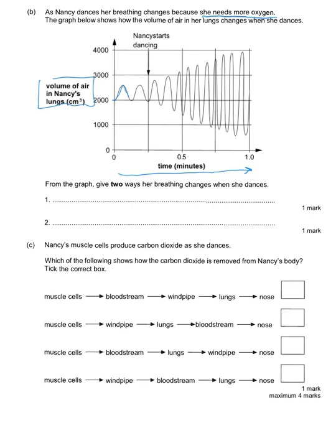You can see that the volume is going up and down as she's breathing in and out. You can also see that the volume of air in Nancy's lungs never goes to zero, so even when she exhales she doesn't breathe out all the air in her lungs. The question says from the graph give two ways that her breathing changes when she dances.